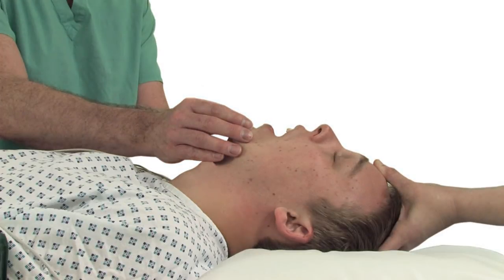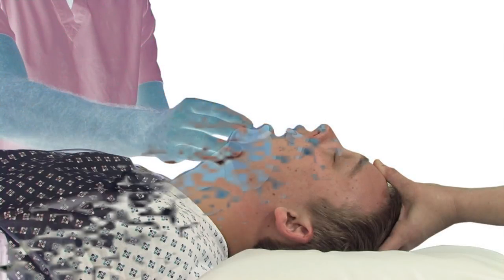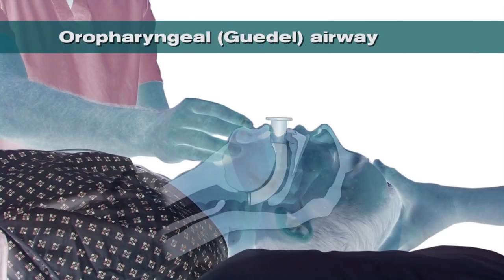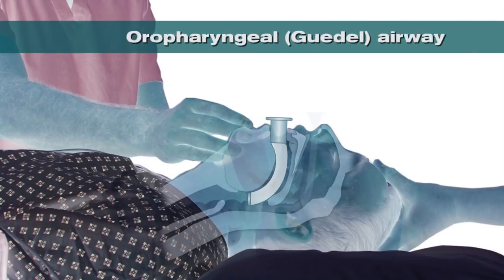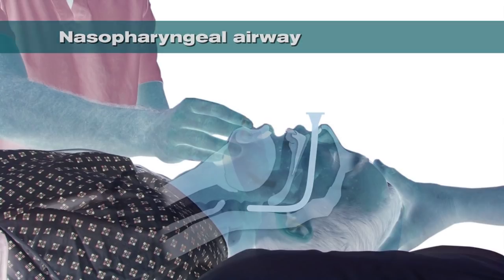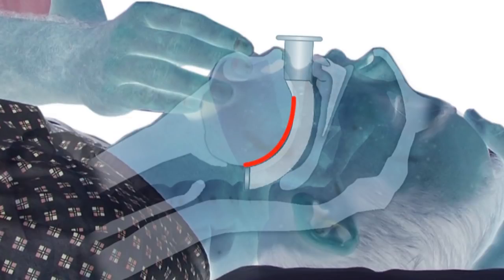A number of adjuncts may also be used to improve the patency of the airway, these being the oral pharyngeal or Guedel airway or a nasal pharyngeal airway. Oral pharyngeal airways, when inserted correctly, lie above and behind the tongue, preventing the tongue and epiglottis from falling backwards and causing airway obstruction.